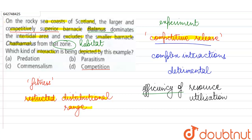So such similar competitive release phenomena was seen when the Balanus barnacle was removed from this zone - then suddenly we saw that the distributional range of Chthamalus increased significantly. So what kind of interaction is present between these two? Option D, competition is the correct answer.